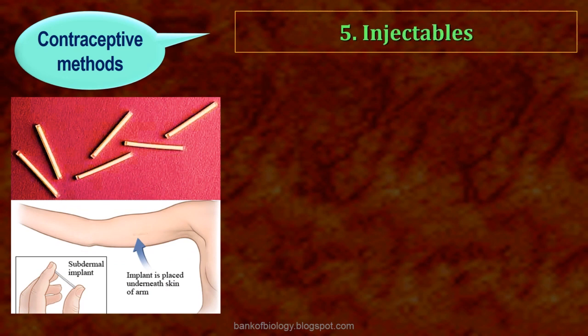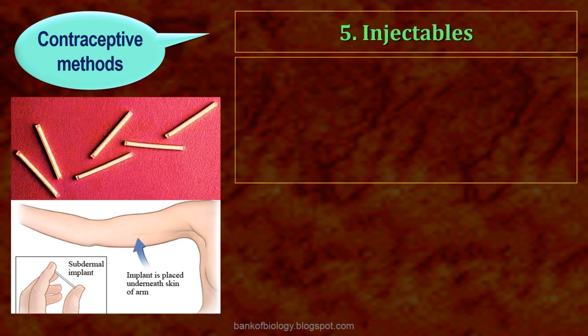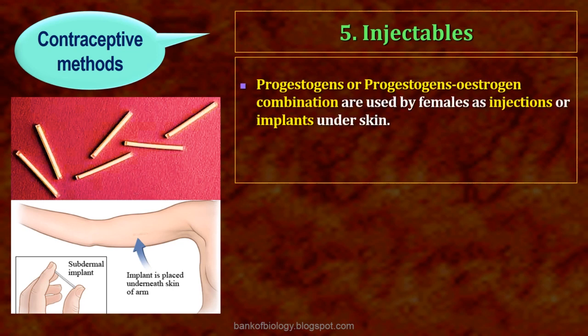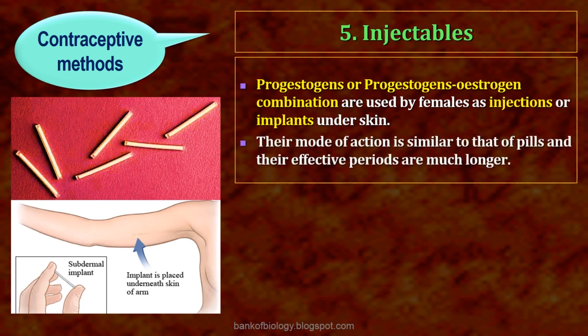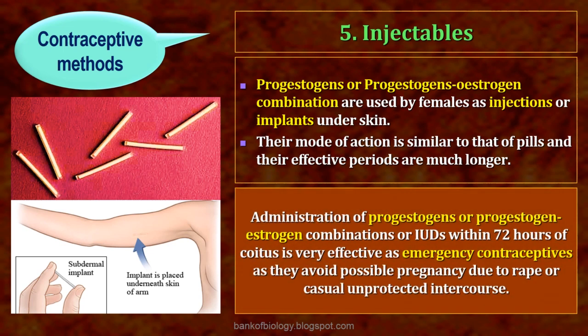The 5th contraceptive method is injectables. Here, progestogens or progestogen-estrogen combinations are used by females as injections or implants under the skin. Their mode of action is similar to that of pills and their effective periods are much longer. Progestogens or progestogen-estrogen combinations and IUDs are used as emergency contraceptives within 72 hours of coitus, to avoid pregnancy due to rape or casual intercourse.